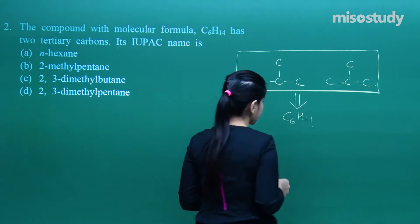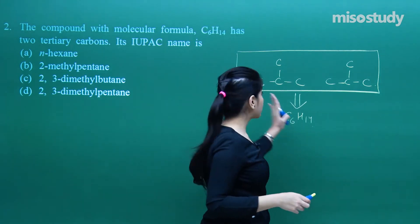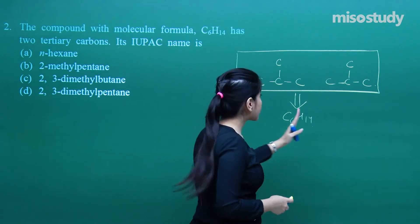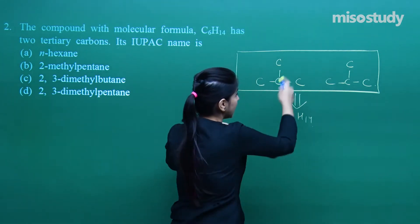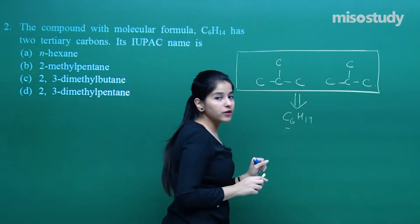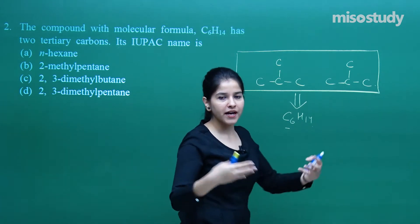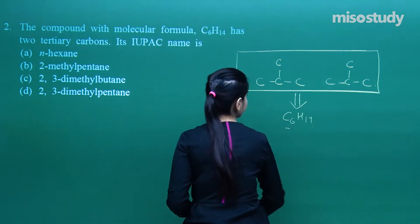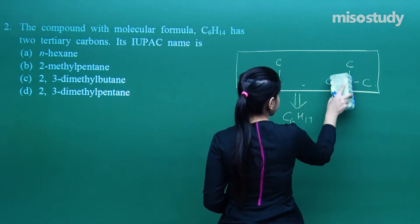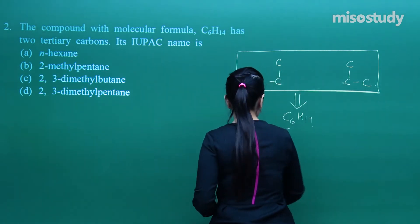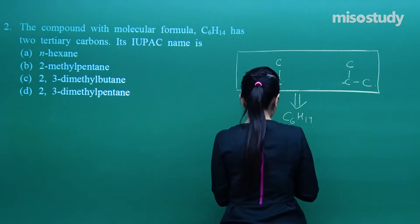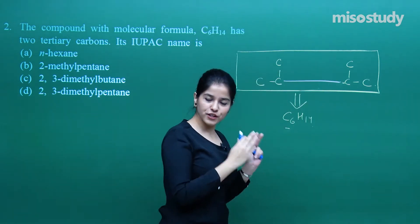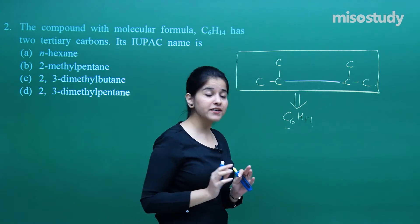If you try to count the number of carbons I have taken over here, these are how many? Eight. I need six only. That means what can I do? I can connect the two structures. So I can connect these two together, and this would be the compound that is required in the question.